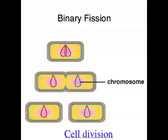Cells are the basic building blocks of all living things, and all cells are derived from other cells. A cell can't just pop into existence — it needs to come from a pre-existing cell. This happens by a process called cell division, and there are three main types of cell division.